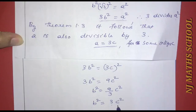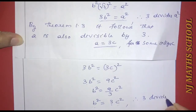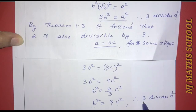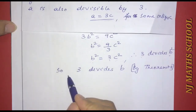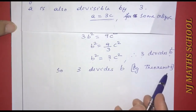Since b squared equals 3c squared, 3 divides b squared. Applying the theorem again — 3 is a prime number and 3 divides b squared — by theorem 1.3, 3 also divides b.